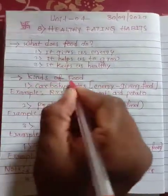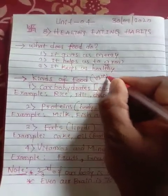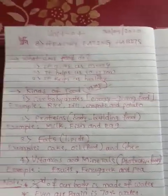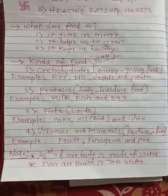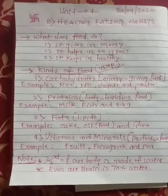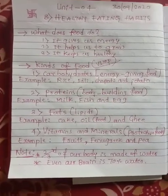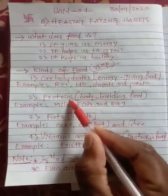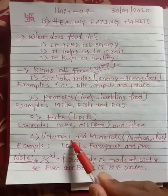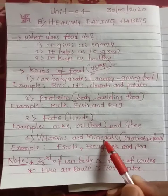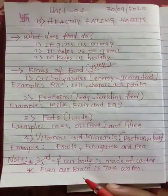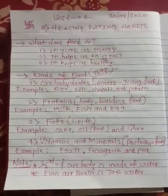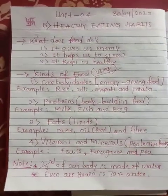One more important topic is the kinds of food — this is very important for your next coming exam. In our daily life we eat different types of food. Basically there are four kinds of food: carbohydrate, protein, fats, and vitamins and minerals. These are the four kinds of food, so in the exam write exactly these four.